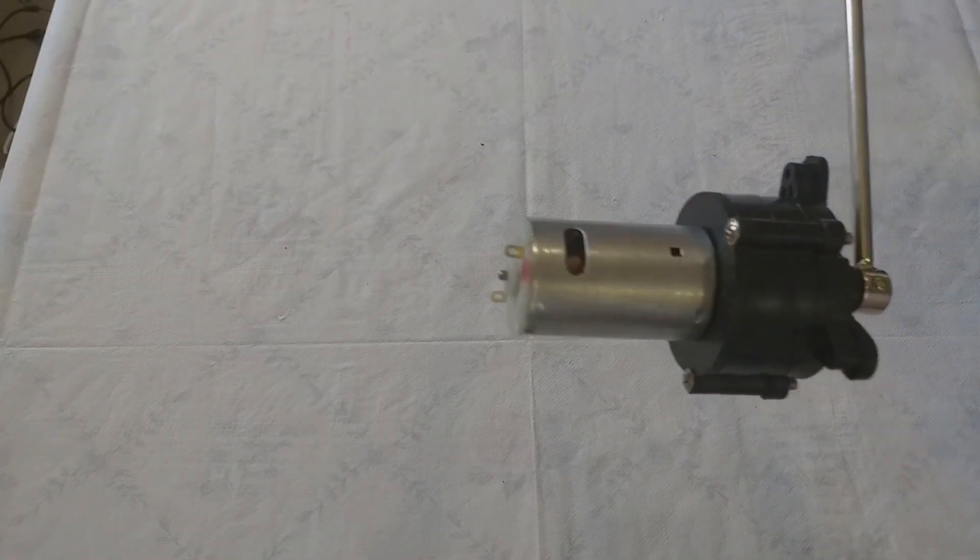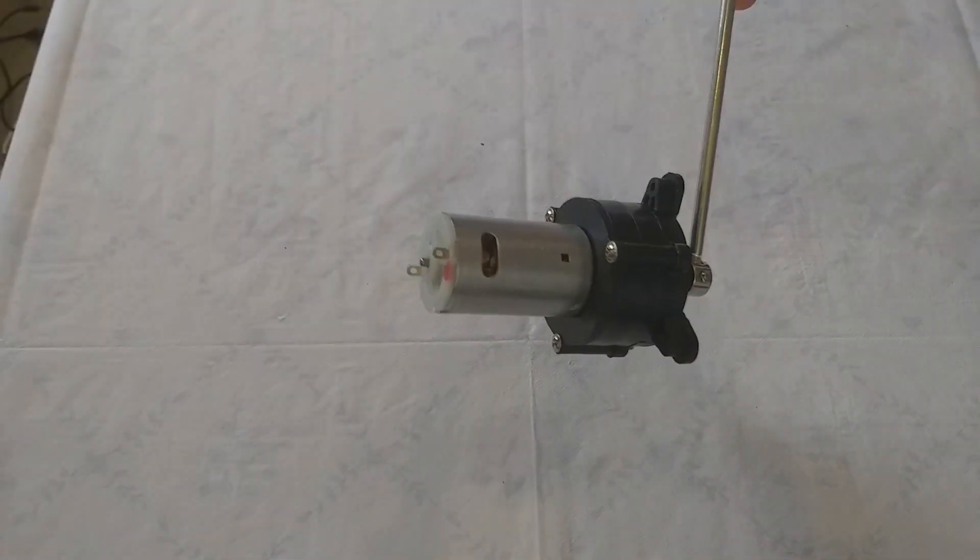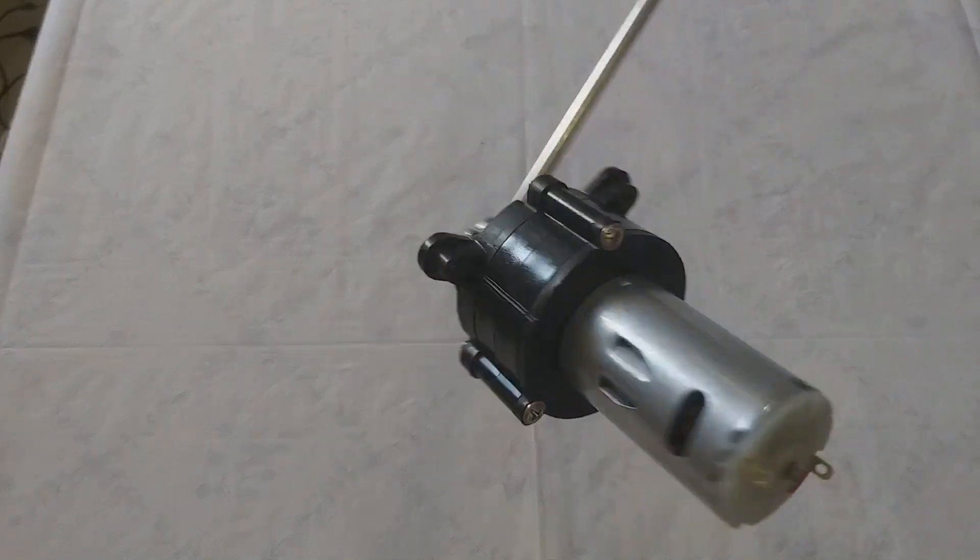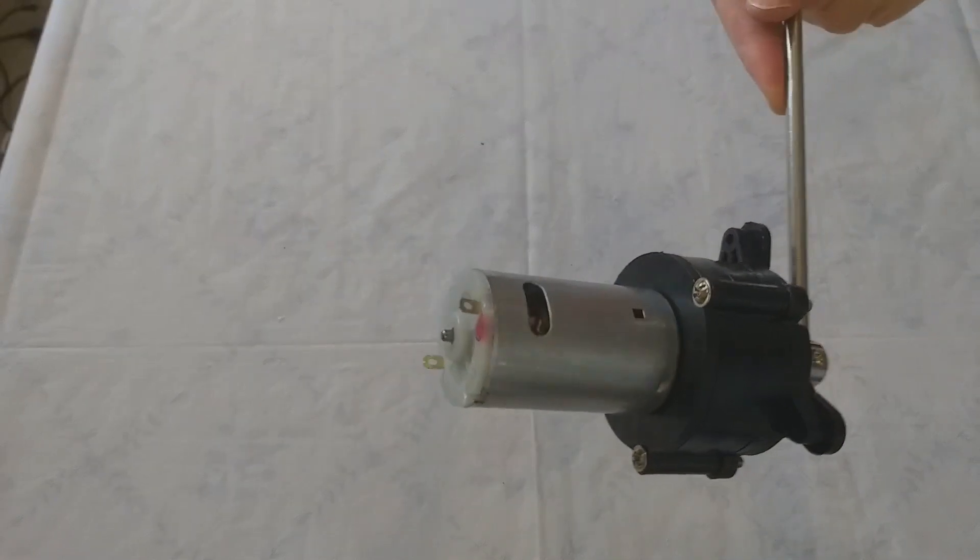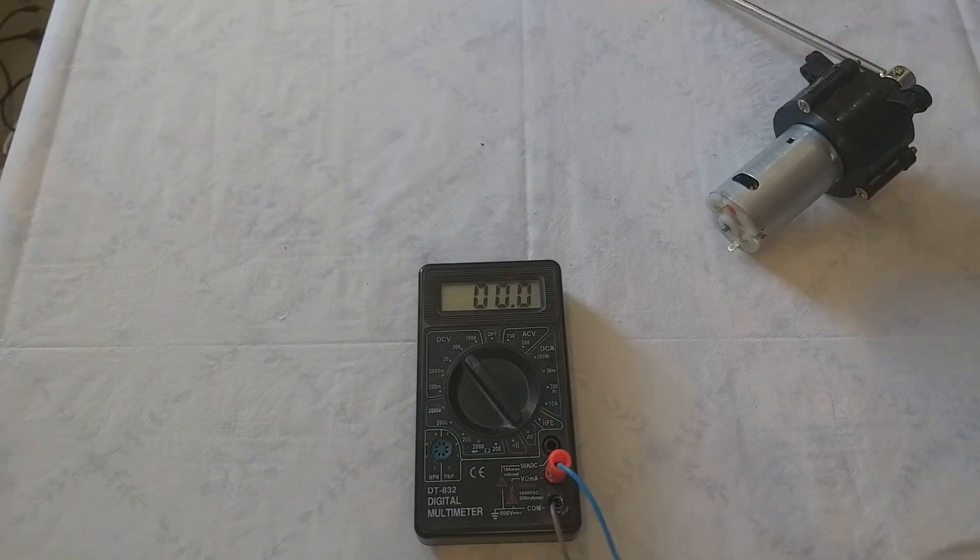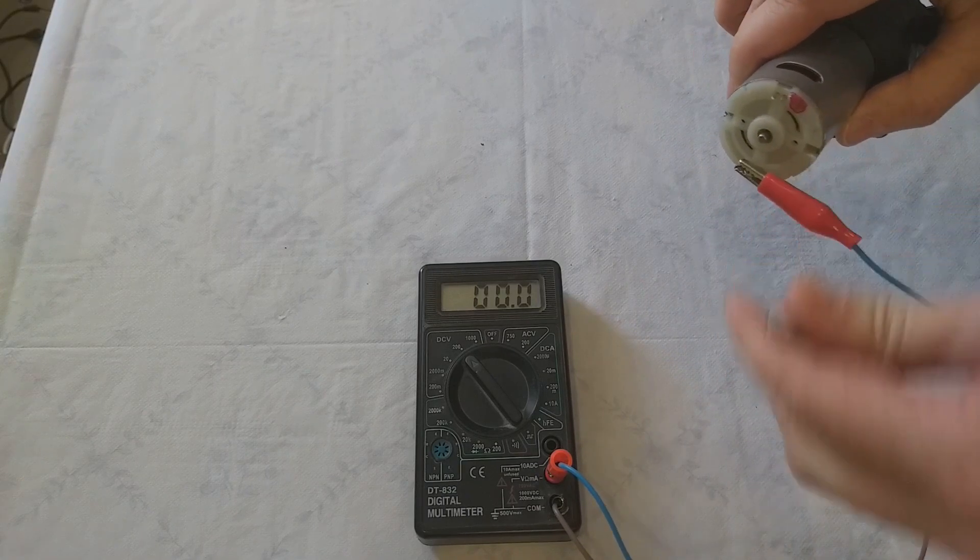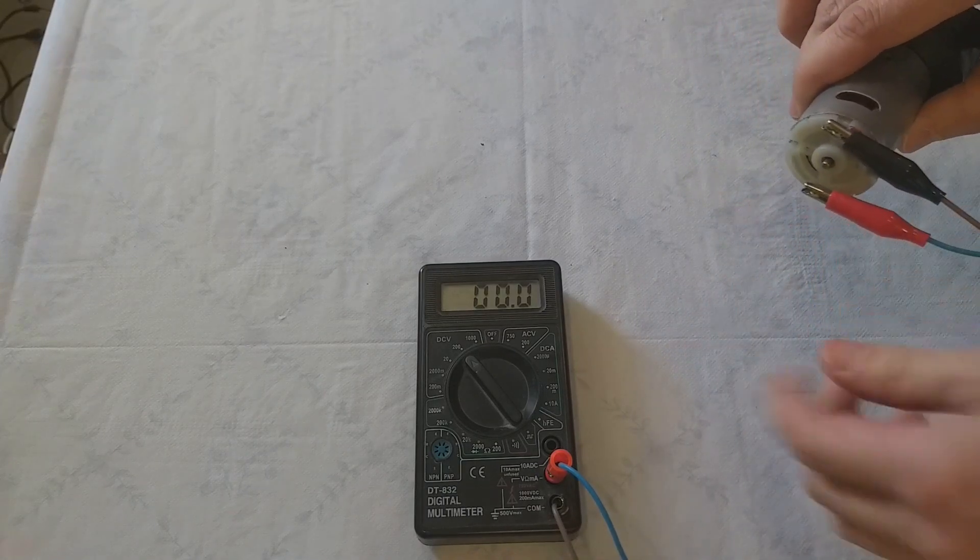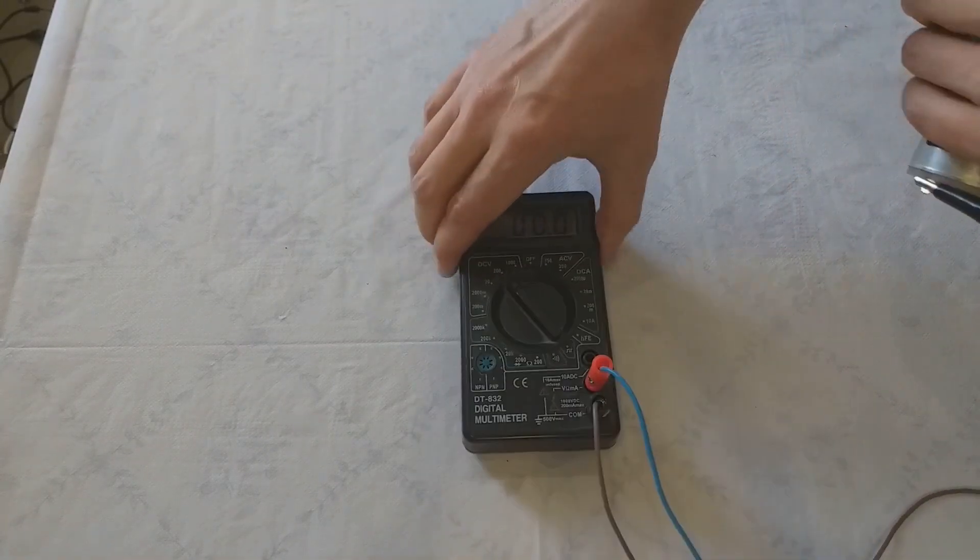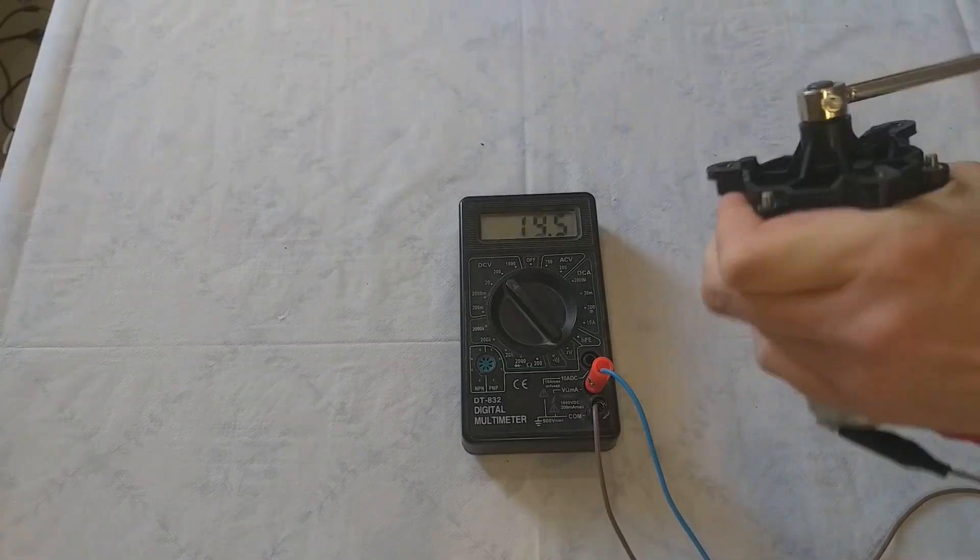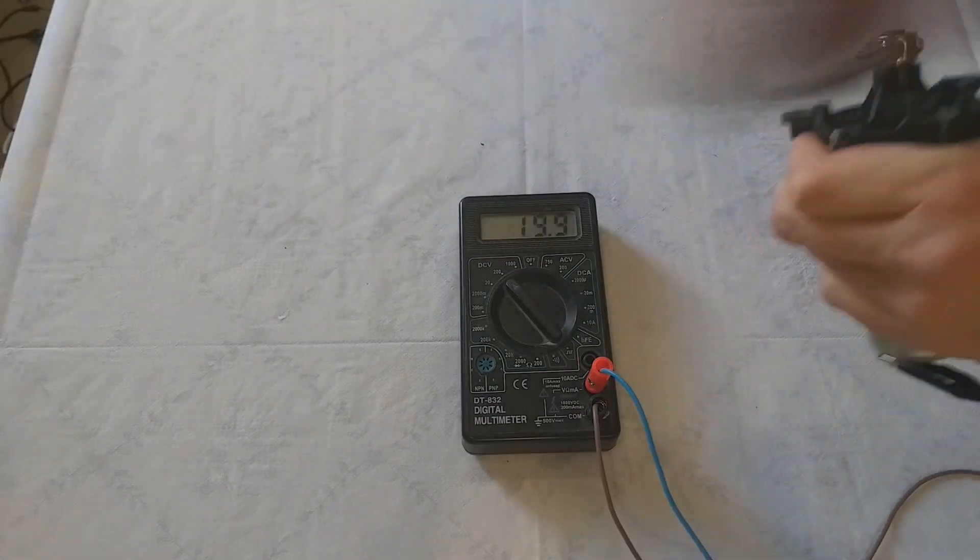It consists of a gearbox, motor, and a rotation handle. First, we measure the voltage on the generator. Connect the tester. I'm turning the generator handle - voltage is more than 30 volts as you can see.